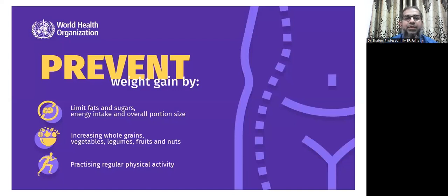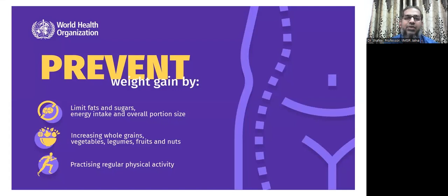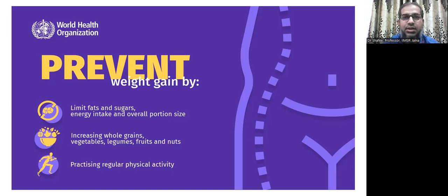How can we prevent obesity? We need to limit fats and sugars in our diet, energy intake, and overall portion size — taking small-sized meals frequently rather than large ones. We should increase whole grains, vegetables, legumes, fruits, and nuts in our diet. Physical activity is very important: 30 minutes to one hour of daily physical activity will help prevent obesity.